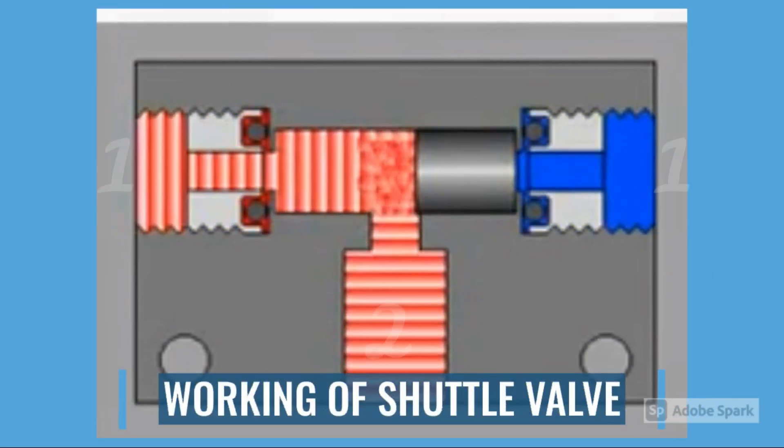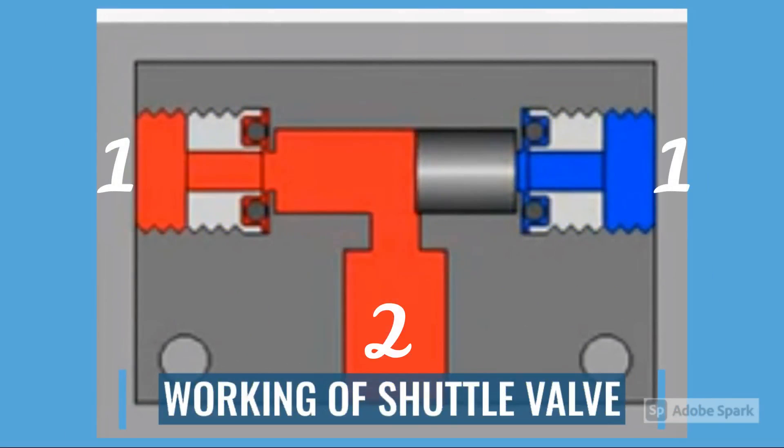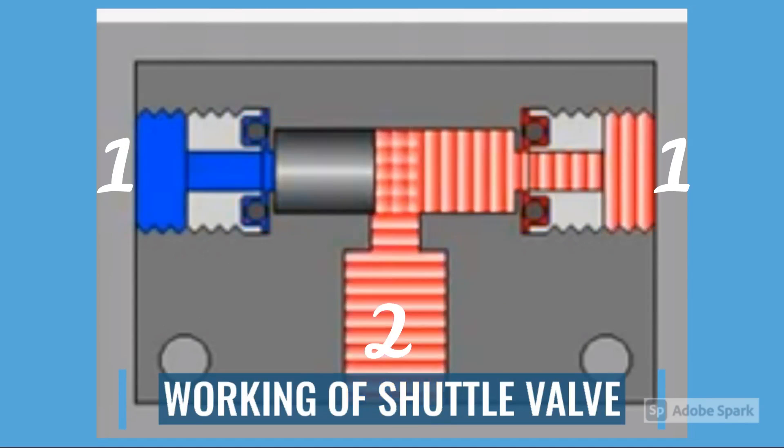The basic structure of a shuttle valve is like a tube with three openings: one on each end and one in the middle. A ball or other blocking valve element moves freely within the tube.